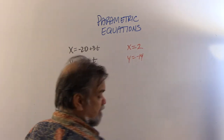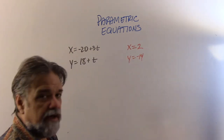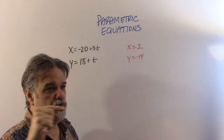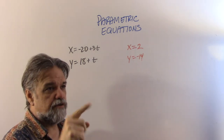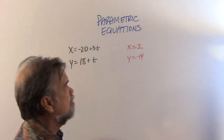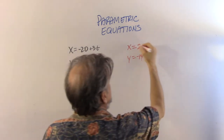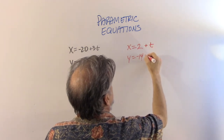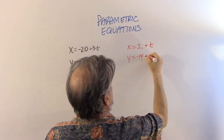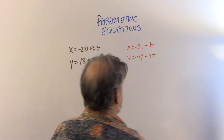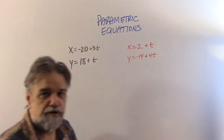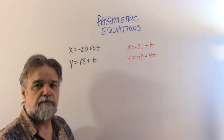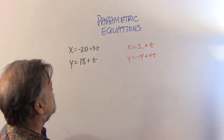For the red ant, starting at (2, -14), running right one unit and up four units per second: x = 2 + t and y = -14 + 4t. Those are our two sets of parametric equations.